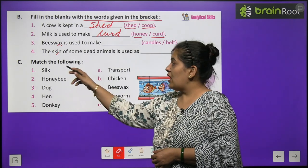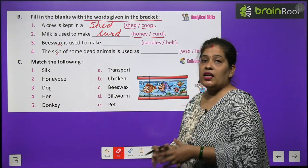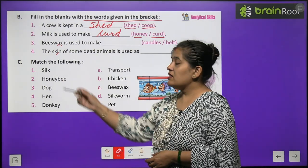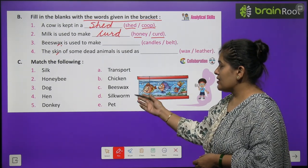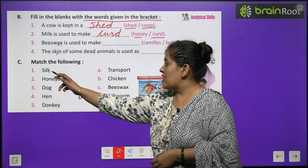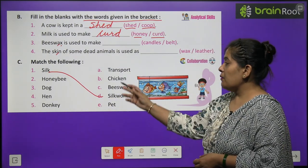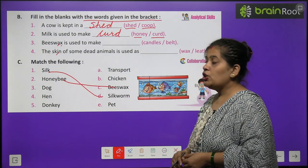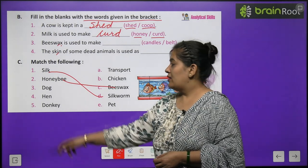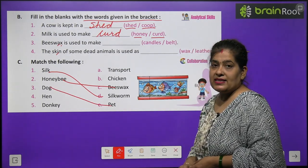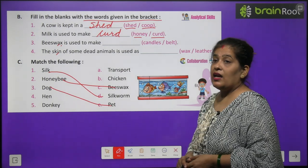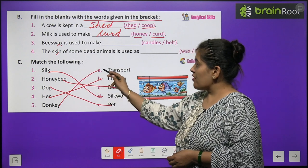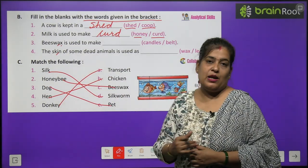Now exercise C. Match the following. Yahan pe do columns hai, un mein kuch naam diye hue hai. Hame unko match karna hai. Silk — silk hame kis se milta hai? Silkworm se — toh hum silk ko match karenge silkworm se. Honey bee — honey bee se kya milta hai? Honey bee se hume bee wax milti hai. Dog — dog kya hai? Dog hai pet animal, toh dog ko hum match karenge pet se. Hen — hen se hume kya milta hai? Hen se hume milta hai chicken. Donkey — donkey hai transport se, kyunki donkey transport ke liye hamari help karta hai.